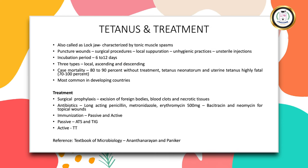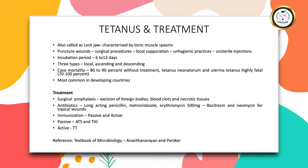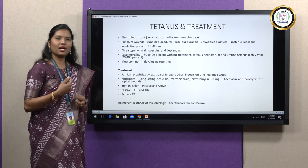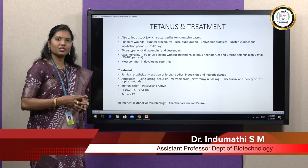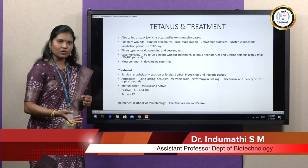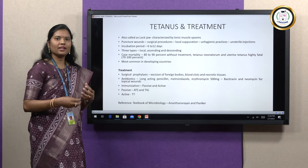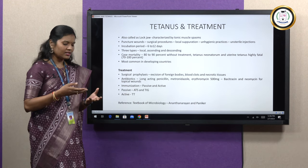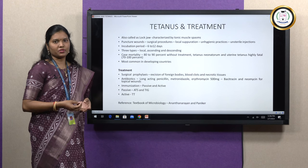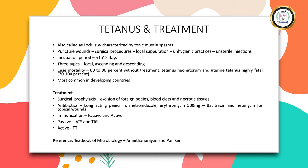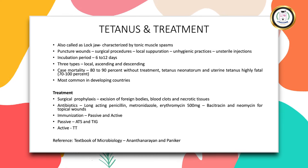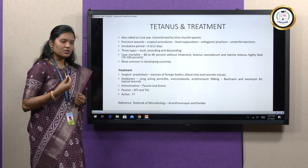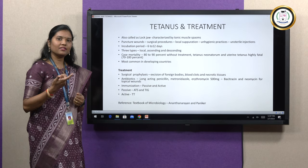Tetanus generally spreads through various modes like puncture wounds, normal wounds, abrasions or cuts on the skin, which easily allow the bacteria to proliferate because an anaerobic environment is created in the case of puncture wounds — ideal for this anaerobic organism. Tetanus rarely occurs in laboratory procedures, but when sterility is lacking in surgical procedures, tetanus could happen. It can also be seen during local infections such as ear infections.